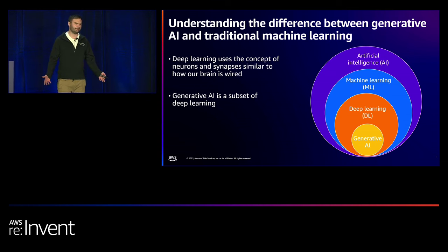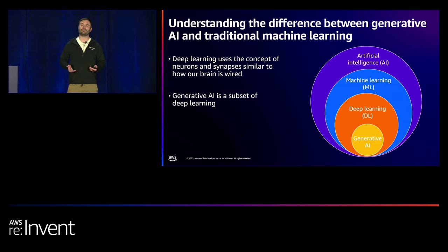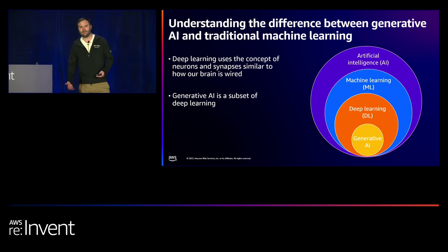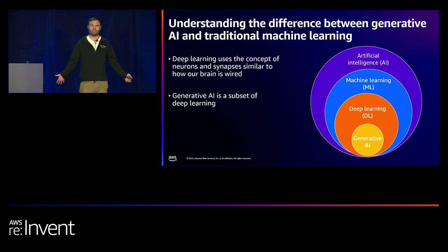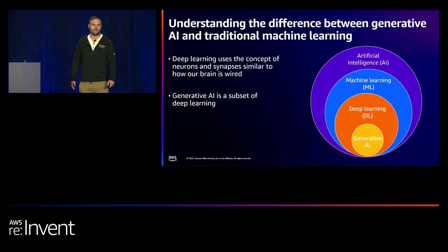Deep learning is a specialized type of machine learning using artificial neural networks, stemming from the biological neural networks in our brain. With those neural networks, we found we could tackle problems even more complex than traditional machine learning might solve, leading to advances in computer vision, object detection, and natural language processing.